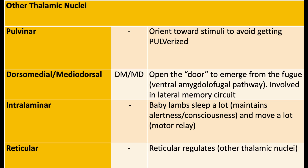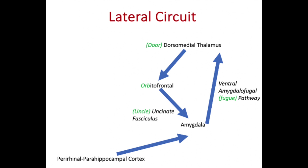We already learned about the dorsomedial or mediodorsal thalamus in the neuroanatomy of memory video. The dorsomedial thalamus is the door in my story that helps remember the lateral memory circuit involving the amygdala. The story goes: sometimes when you're super emotional, you feel like you're in a fugue state — until you open the door to the thalamus, the sensory relay station that brings you back to your senses. You see an orb and think it's the spirit of your uncle, and you start to cry again because of that amygdala acting up.